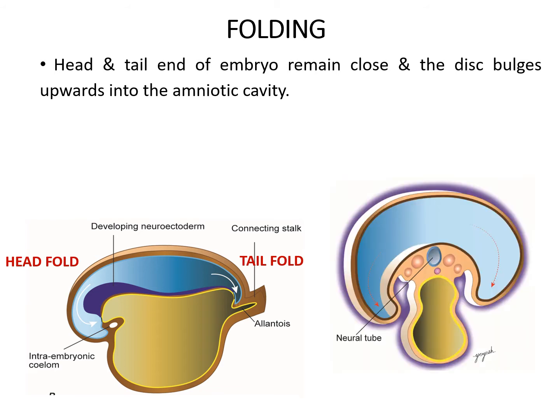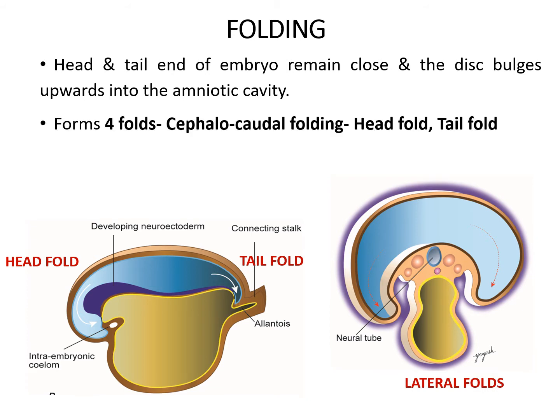At the same time, due to rapid growth of somites, there is also folding in a transverse plane with formation of two lateral folds. Thus, four folds are formed: the cephalocaudal folding in the median plane through the head and tail folds, and the transverse folding through the two lateral folds. All four folds converge on the ventral aspect of the embryo, converting the flat embryonic disc into a cylindrical embryo.